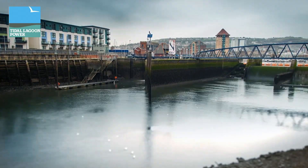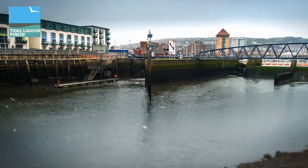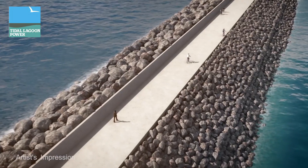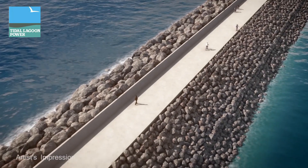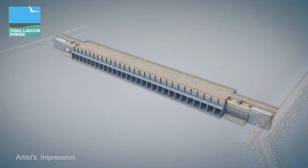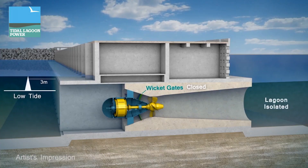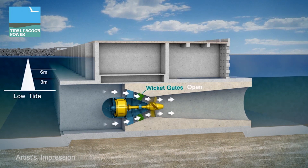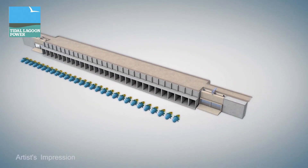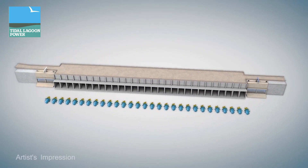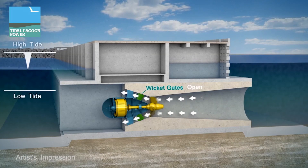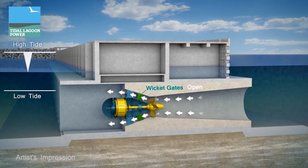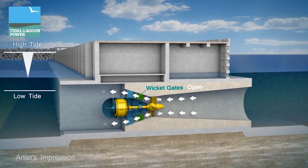Tidal Lagoon Power is a company from Gloucester, England, incorporated in 2014. The working principle is to capture a large volume of water behind a man-made structure, which is then released to drive turbines and generate electricity. The turbine is a bi-directional, low-head Kaplan bulb hydro turbine. The company is looking for funding to develop several projects.